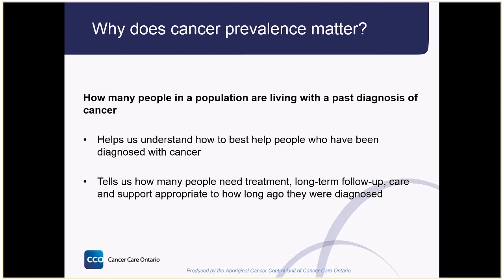Measuring prevalence allows us to understand how to best help people who've been diagnosed with cancer. Knowing a cancer's prevalence means we can plan for how many people with a certain cancer will need treatment, long-term follow-up, care, and support based on how long it's been since they were diagnosed. For example, someone who's in the middle of chemotherapy will have very different needs than someone who finished their treatment years before and has returned to a normal routine.